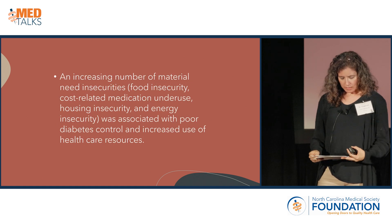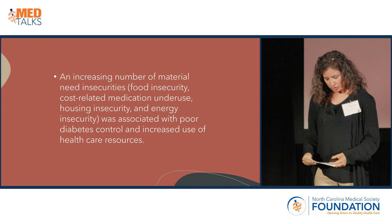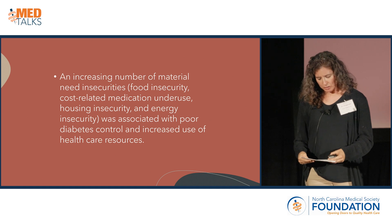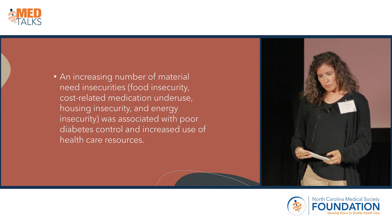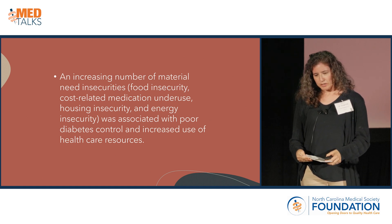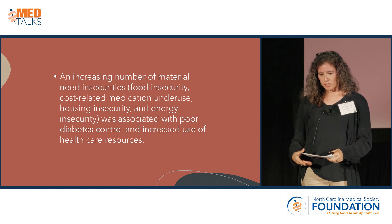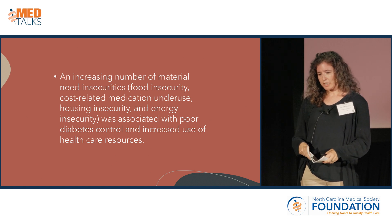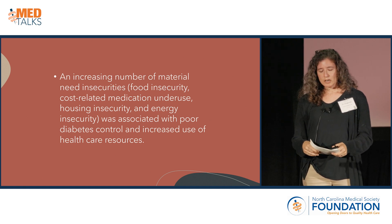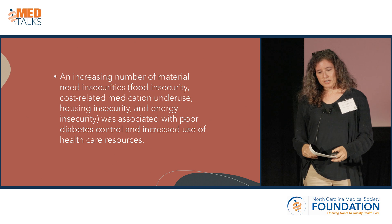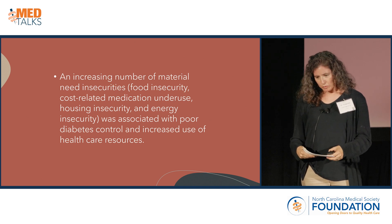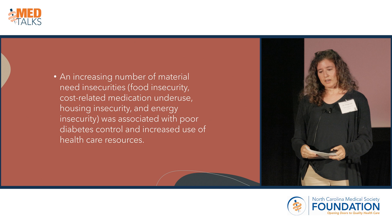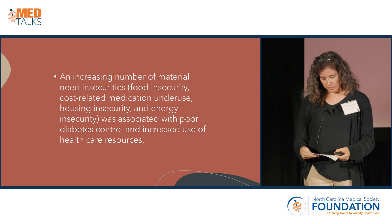Another study published in JAMA Internal Medicine in 2014 found that an increasing number of material need insecurities — like food insecurity, cost-related medication underuse, housing insecurity, and energy insecurity — was associated with poor diabetes control and an increased use of health care resources.